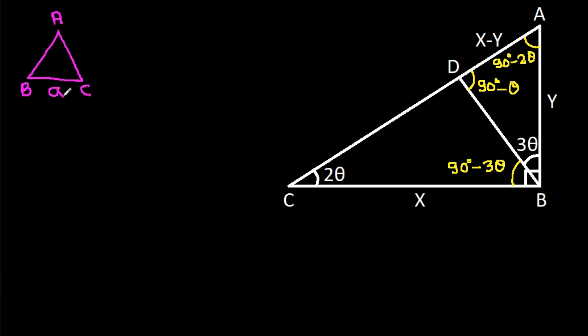Sin(90 degrees minus 2 theta) equals cos 2 theta. So we have: y over sin(90 degrees minus theta), which equals cos theta, is equal to AD which is x minus y, over sin 3 theta. And from here we can get x equals y times cos 2 theta over sin 2 theta.